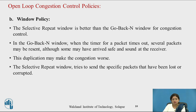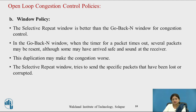Window policy: two methods are used — selective repeat and go-back-N. The selective repeat window is better than the go-back-N window for congestion control. In go-back-N, when the timer for a packet expires, several packets may be resent, even though some arrived safely at the receiver, creating duplication and causing congestion. In selective repeat, only the specific lost or corrupted packet is resent, which is why selective repeat is the better policy.